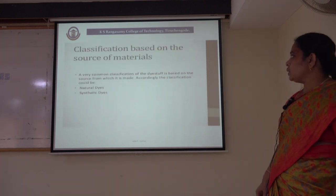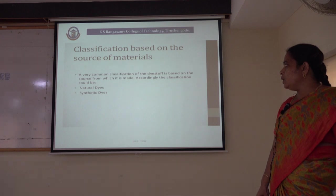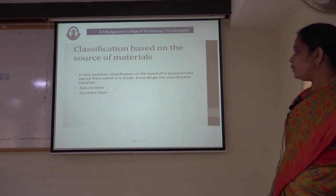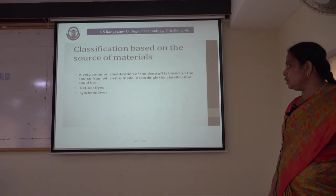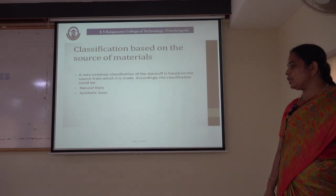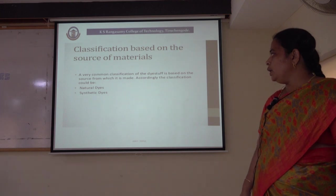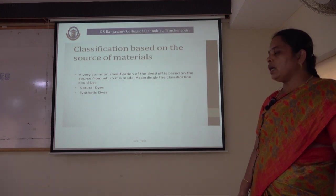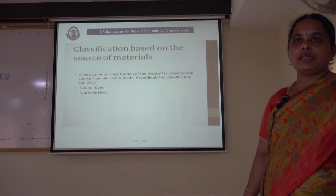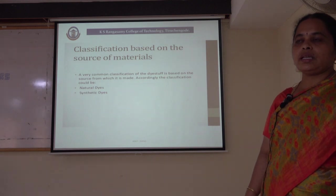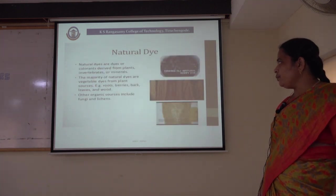Coming to the classification based on the source of materials — a very common classification of dyestuffs is based on the source from which they are manufactured. Accordingly, the classification could be natural dyes and synthetic dyes, that is, dyes are classified as natural dyes and synthetic dyes based on their origin.